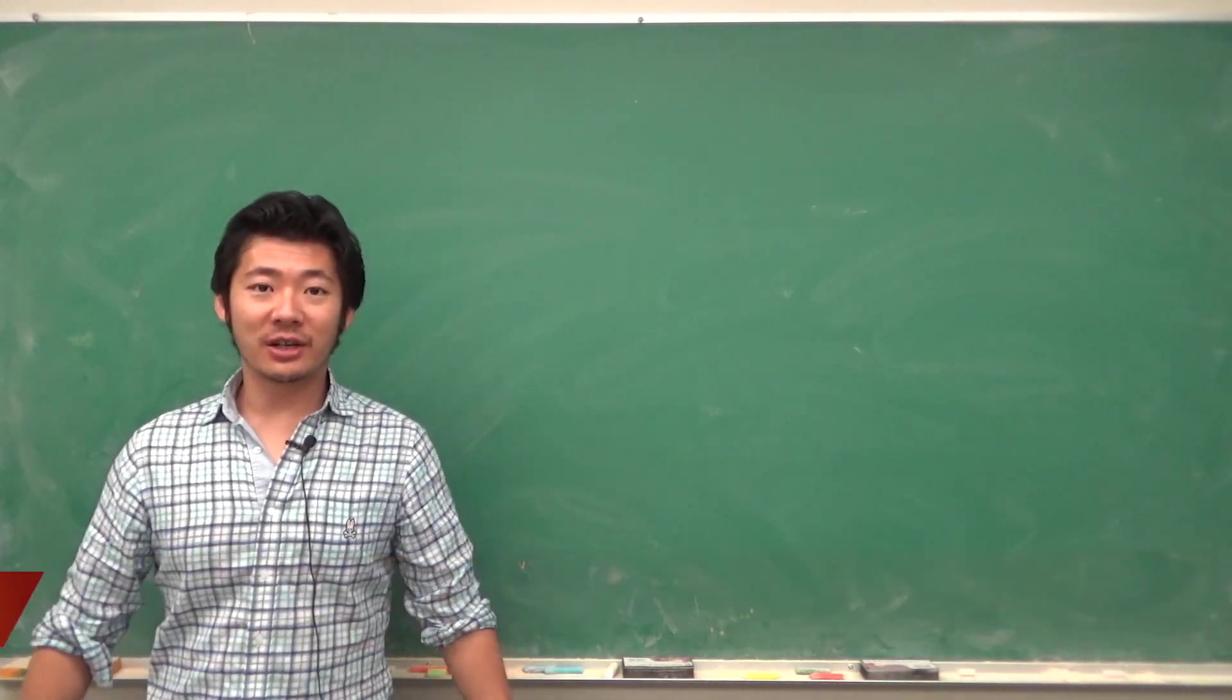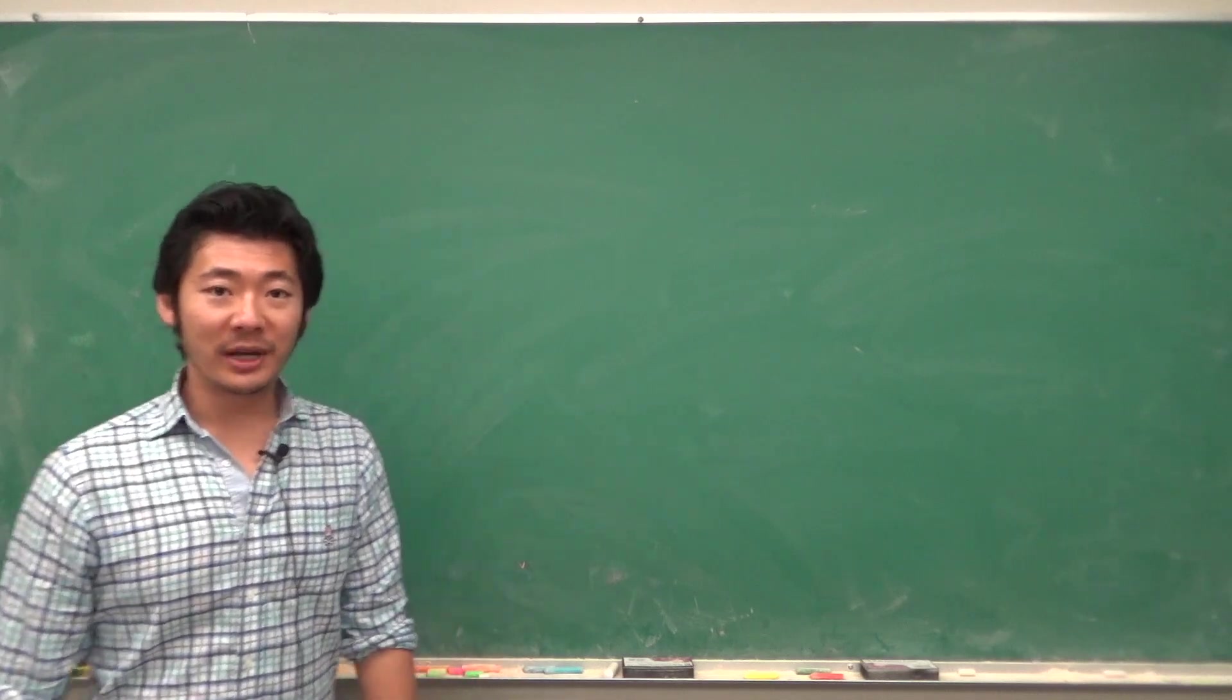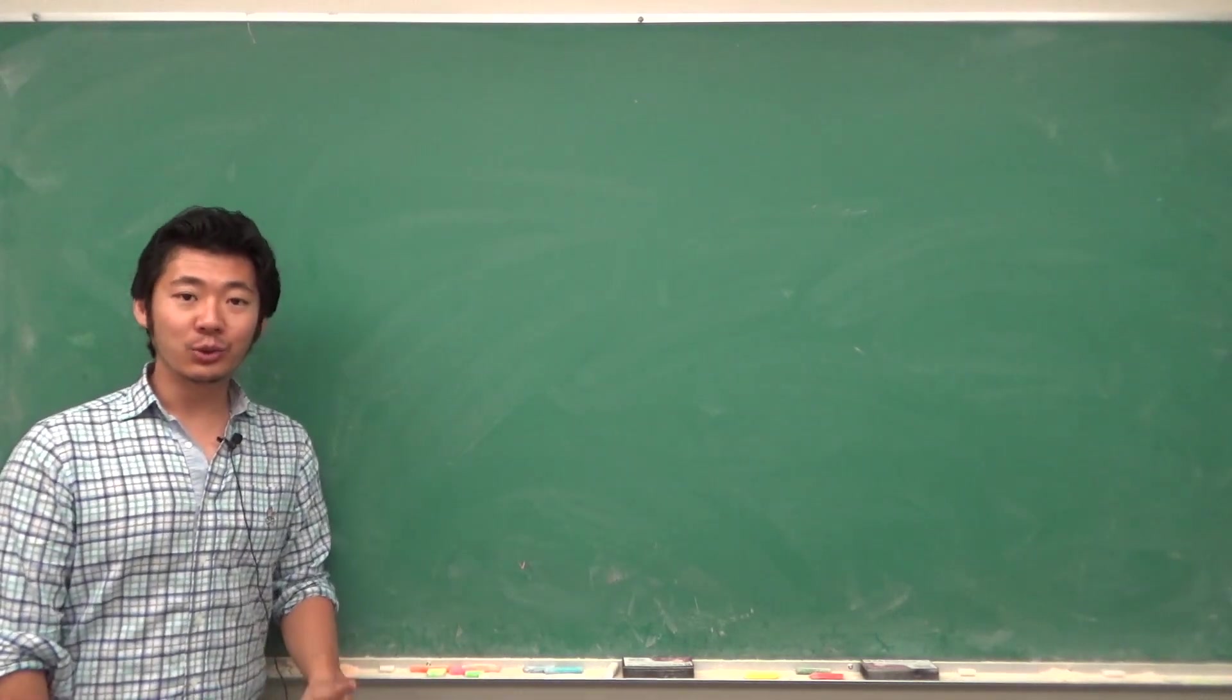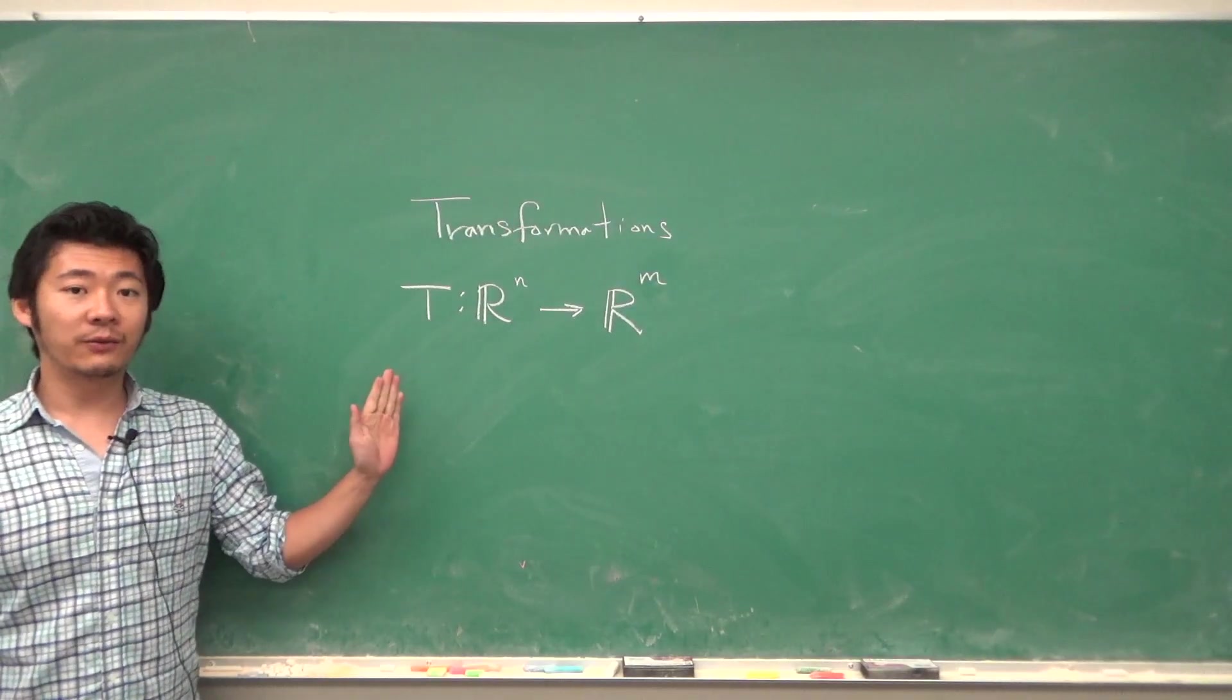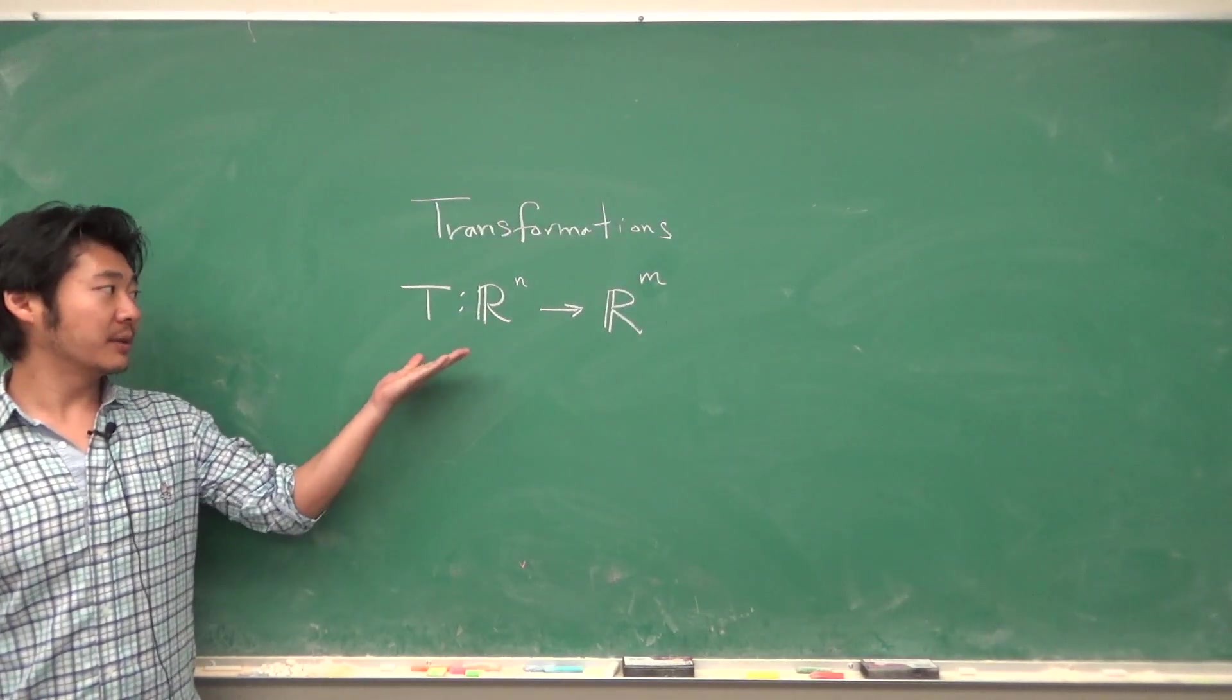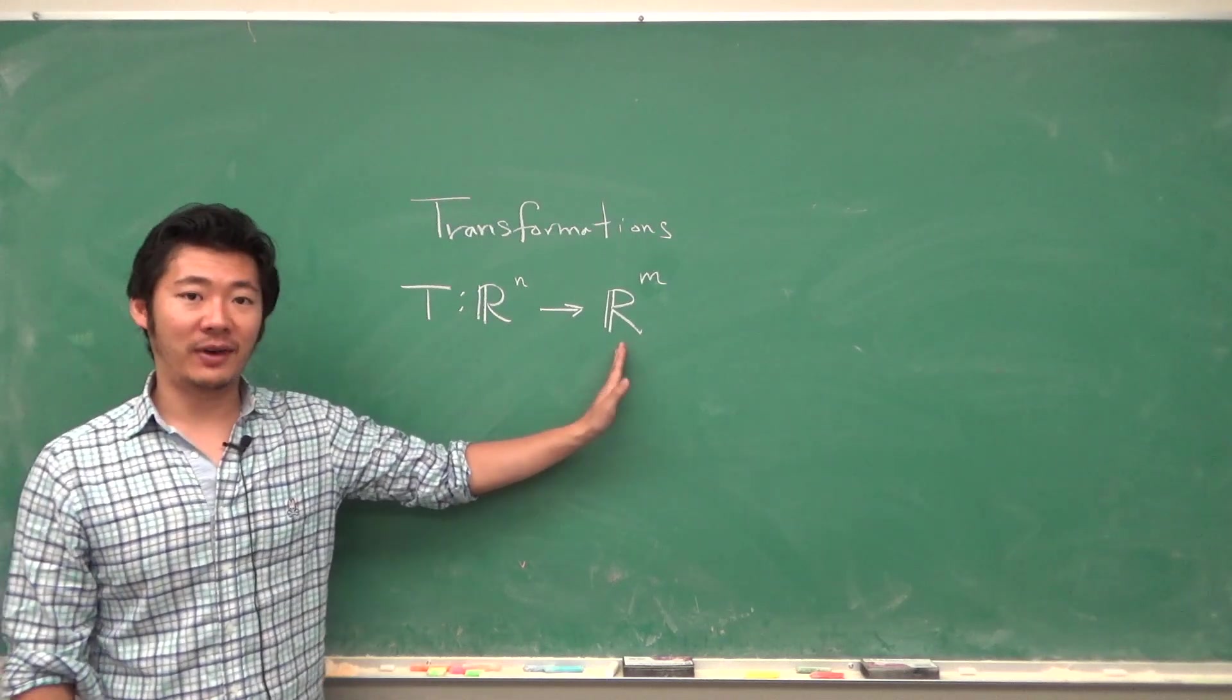Hello everyone! In this video I'll talk about linear transformations. So first of all, what is a transformation? Well, it's a rule that assigns vectors to different vectors. The notation for a transformation is something like this: a transformation that takes an n-vector into an m-vector.